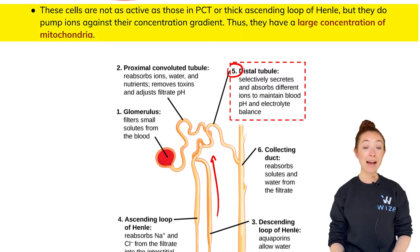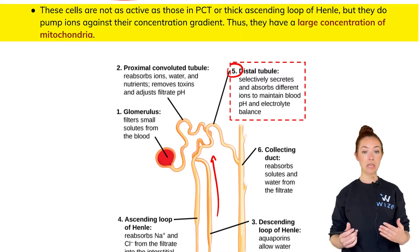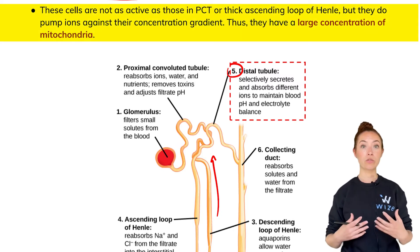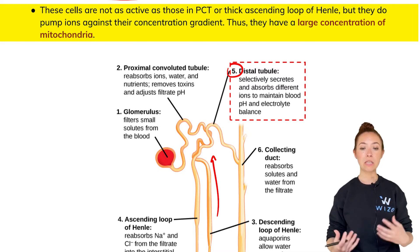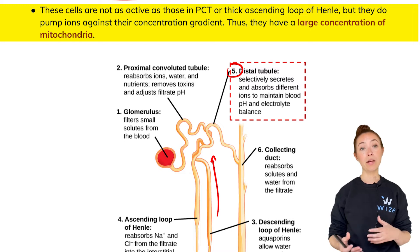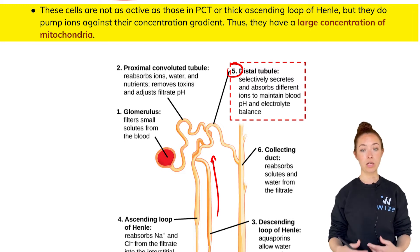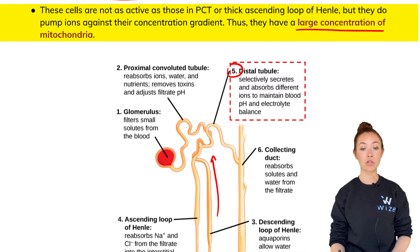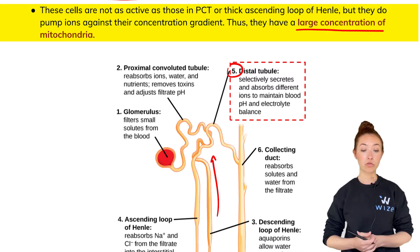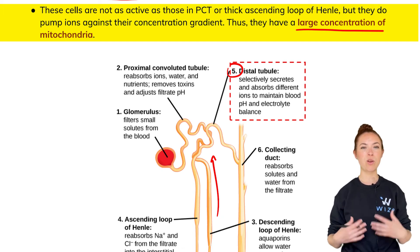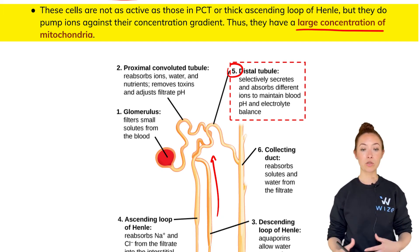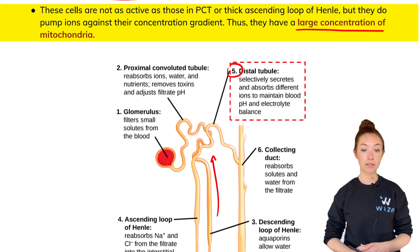These cells are not as active as those of the PCT, which requires a ton of energy because they're reabsorbing so many things, but DCT cells also pump ions against their concentration gradient. So they also require energy and therefore have a large concentration of mitochondria — not as much as the PCT, but they also have a lot of mitochondria to produce all the ATP required to pump things against their concentration gradients.